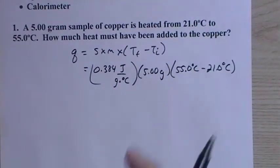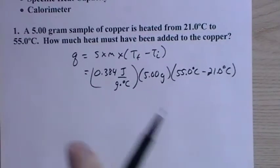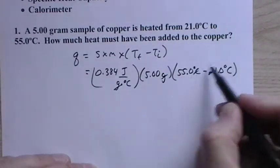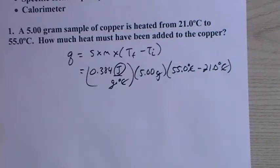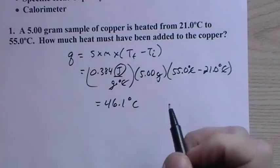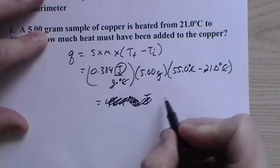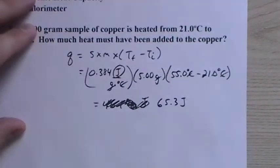So it's 0.384 joules per gram degrees Celsius. The mass is given as 5 grams. The final temperature is 55 degrees Celsius, initial temperature is 21. So everything's there. All that we're missing is Q, and that is what they were asking for. It had to be added so it should be positive. This difference is going to be positive. Grams cancel, degrees Celsius cancel, we're left with joules. So 0.384 times 5 times 34, and this is 65.3 joules.